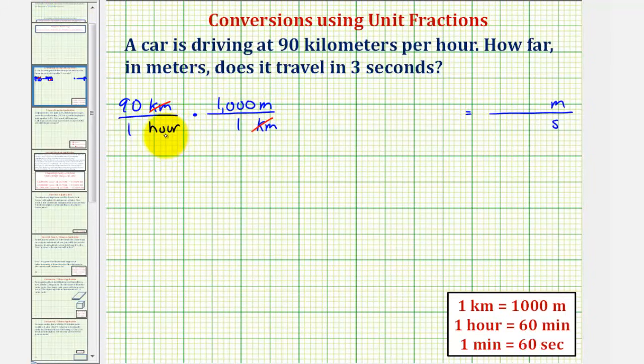Now we still have to convert hours to seconds, so we'll first convert hours to minutes by multiplying by another unit fraction. We don't want hours in our answer, so we'll have to have hours in the numerator and minutes in the denominator.